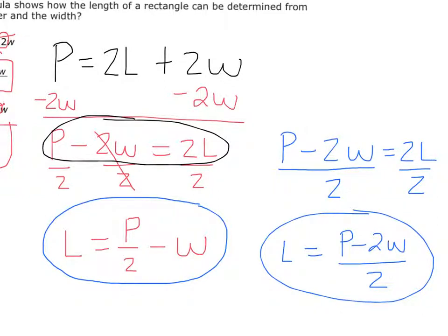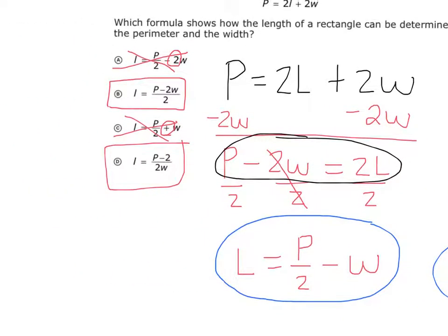So now let's go see if we can find P minus 2W all over 2 in the answer choices. Do you see P minus 2W all over 2? Right here in B. So D is wrong and B is your right answer.